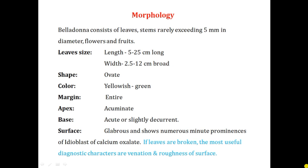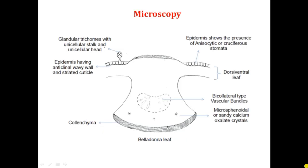Next is microscopy. This schematic diagram shows the most important features. First, it belongs to the category of dorsiventral leaf — it shows the presence of palisade cells only on one side of the epidermis.